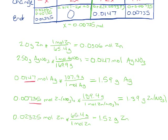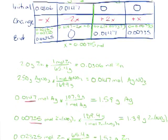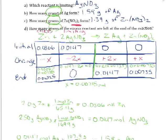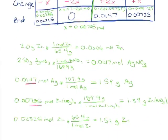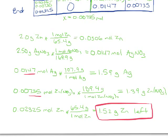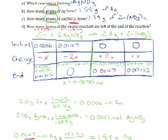I'm sticking with three significant figures because that's how many I had in all of the original numbers I was given. So at the end of the reaction, I find that I have 1.52 grams of zinc left, and I can write that in at the top of the page.